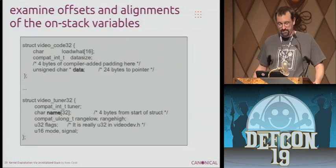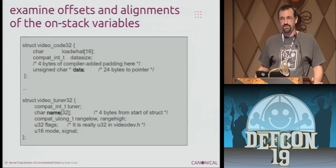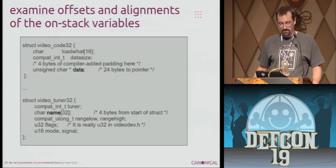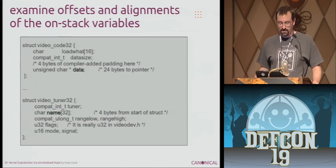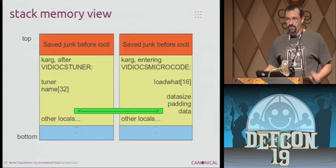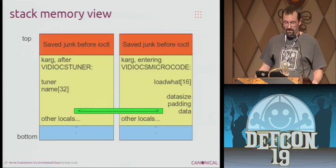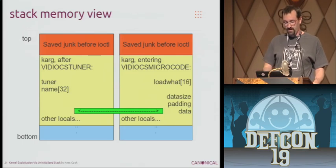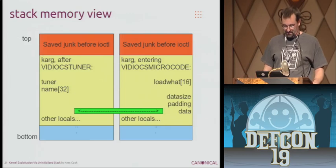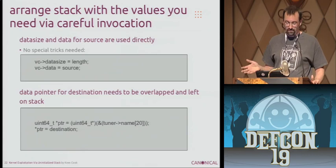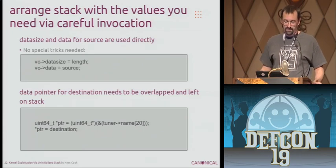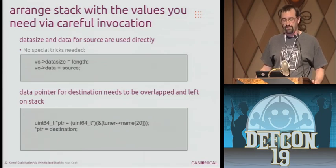You have to look at the two different structures that are there. Our target is the video_codec32 — we want to control the data field. So we have to figure out where it is in relation to the other structure in the union. It was relatively straightforward because in video_tuner there was a large name string. Looking at it graphically: after we've returned from the tuner ioctl, what's left on the stack is whatever we had put into that structure. Then we call the microcode function and whatever was there will end up in the data field. The only thing we need to do is calculate the offset inside the other structure.